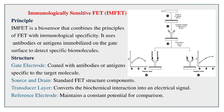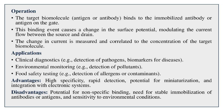Immunologically sensitive FET (IMFET) — Principle. IMFET is a biosensor that combines the principles of FET with immunological specificity. It uses antibodies or antigens immobilized on the gate surface to detect specific biomolecules. Structure: gate electrode coated with antibodies or antigens; source and drain are standard FET structure components; a transducer layer converts the biochemical interaction into an electrical signal; a reference electrode maintains a constant potential. Operation: the target biomolecule (antigen or antibody) binds to the immobilized antibody or antigen on the gate, causing a change in the surface potential, modulating current flow between source and drain; the change in current is measured and correlated to the concentration of the target biomolecule.